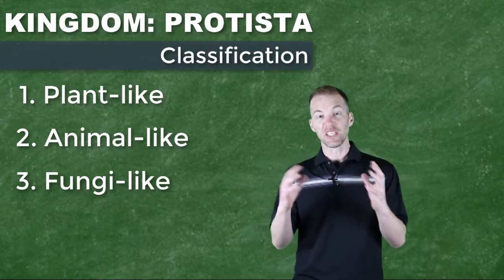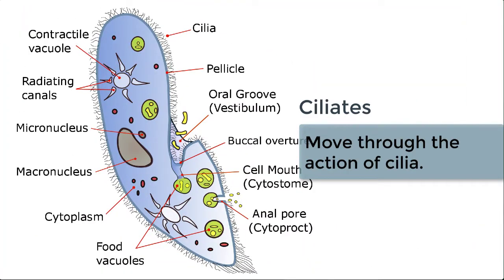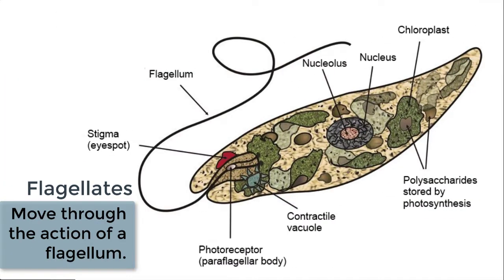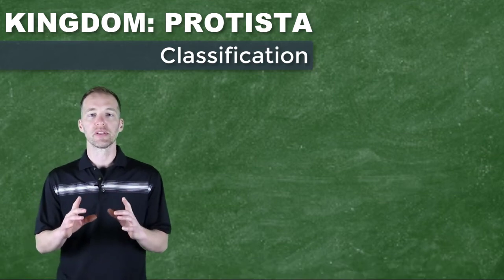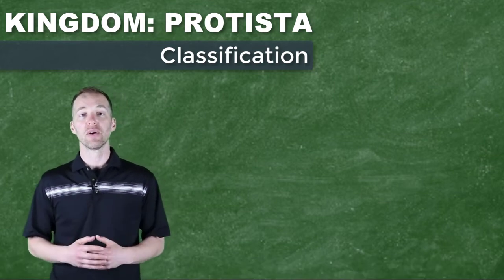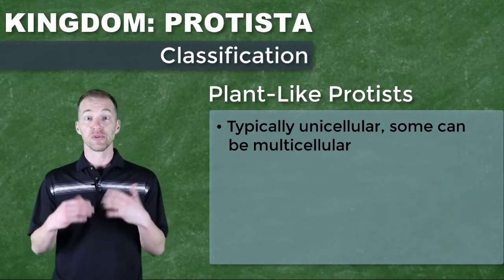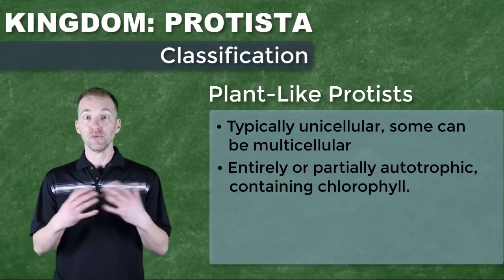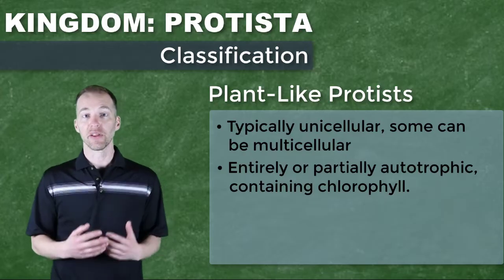We've also classified some protists based on the way they move. Ciliates move through a fluid medium based on the action of cilia, and flagellates move through a fluid medium through the action of one or more flagella. Some flagellates are what we refer to as mixotrophic — they are both autotrophic, meaning they can use photosynthesis, but they also acquire nutrients by ingesting other organisms.